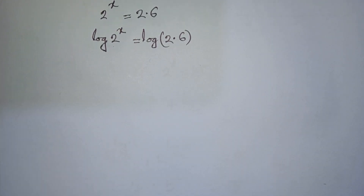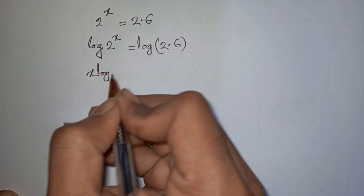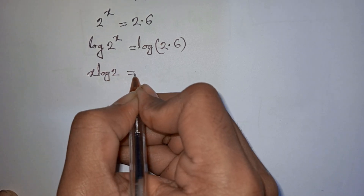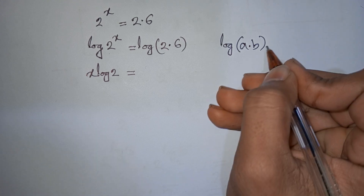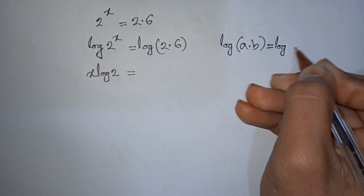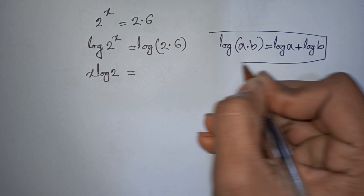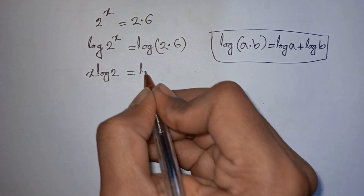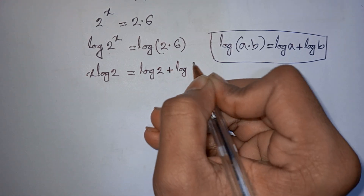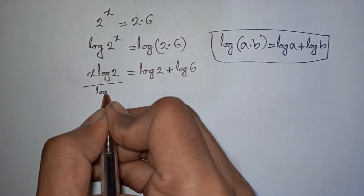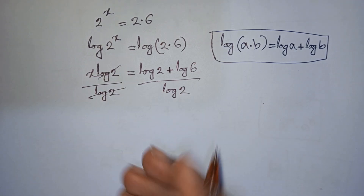The power x moves to the front: x log 2 is equal to log(2 times 6). Applying the formula log(a times b) equals log a plus log b, we get x log 2 equals log 2 plus log 6. So log 2 cancels on both sides.